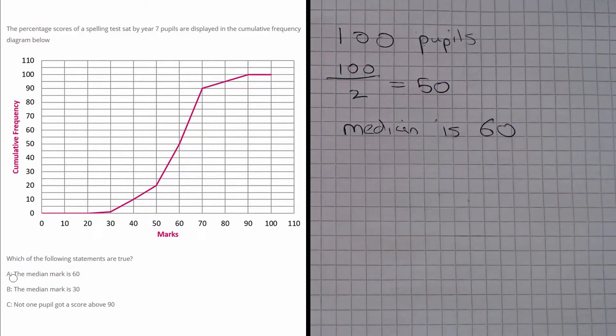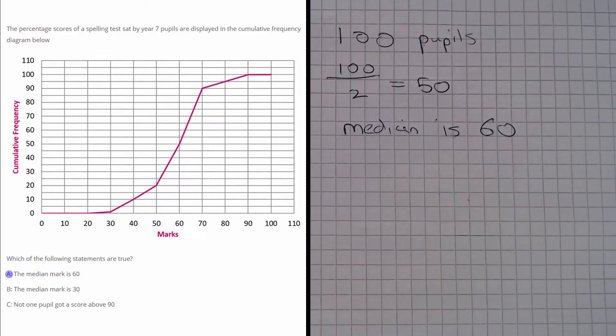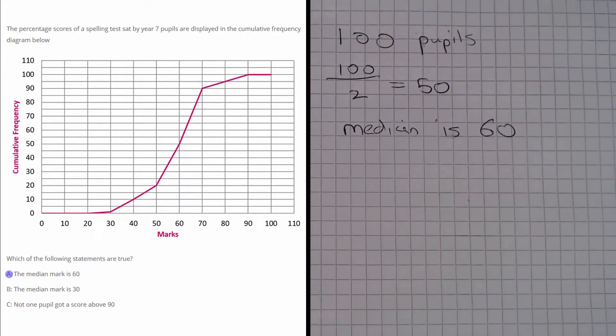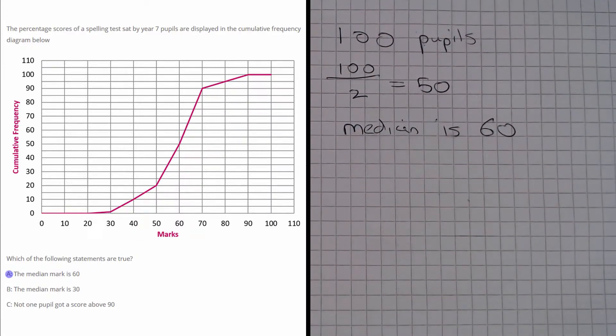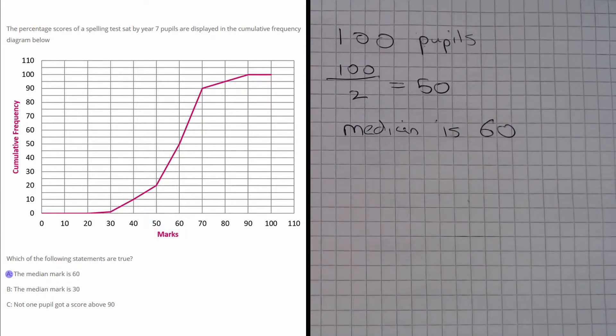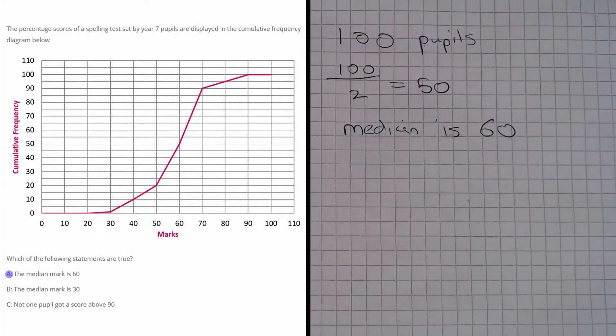So let's move on to part B. Well part B is an easy one, because part B says that the median mark is 30. Obviously this is false because we have shown in the previous part that the median is actually 60.